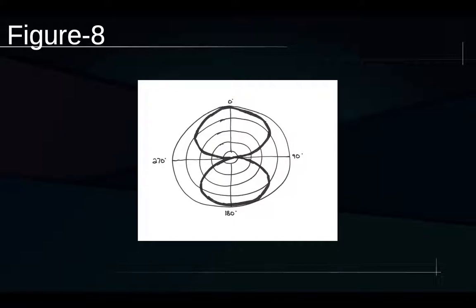One more common directionality is the figure-eight microphone, which is equally sensitive in two opposite directions. At the zero-degree on-axis position we're maximally sensitive; sensitivity decreases to the sides, but when we get to the 180-degree off-axis position we're just as sensitive as we were in the front. The same pattern repeats on the other side. In this course we're probably going to get the most use out of the omnidirectional and cardioid patterns.